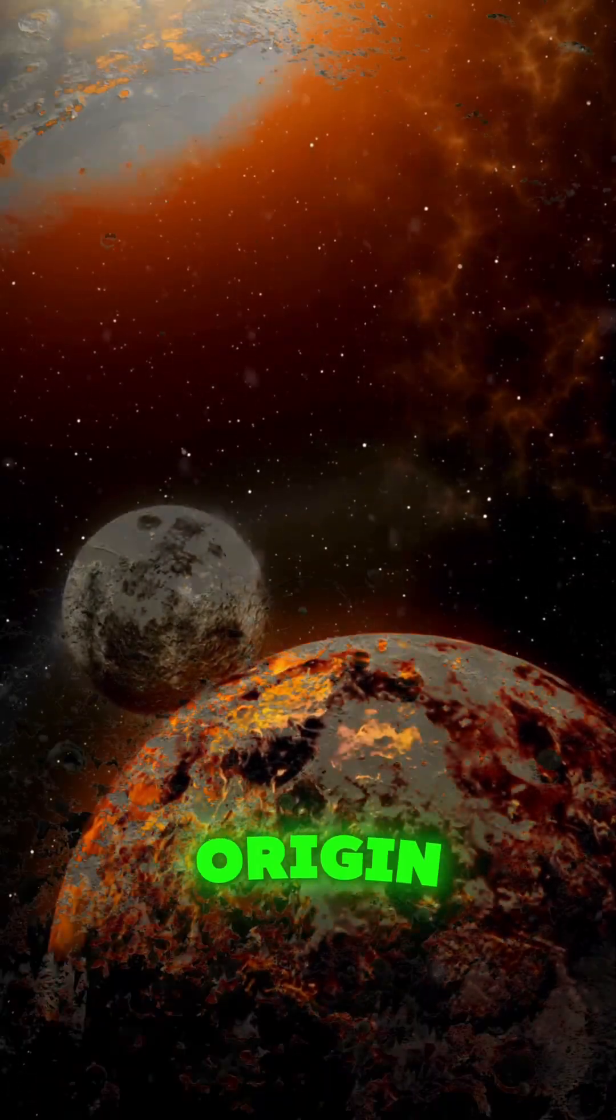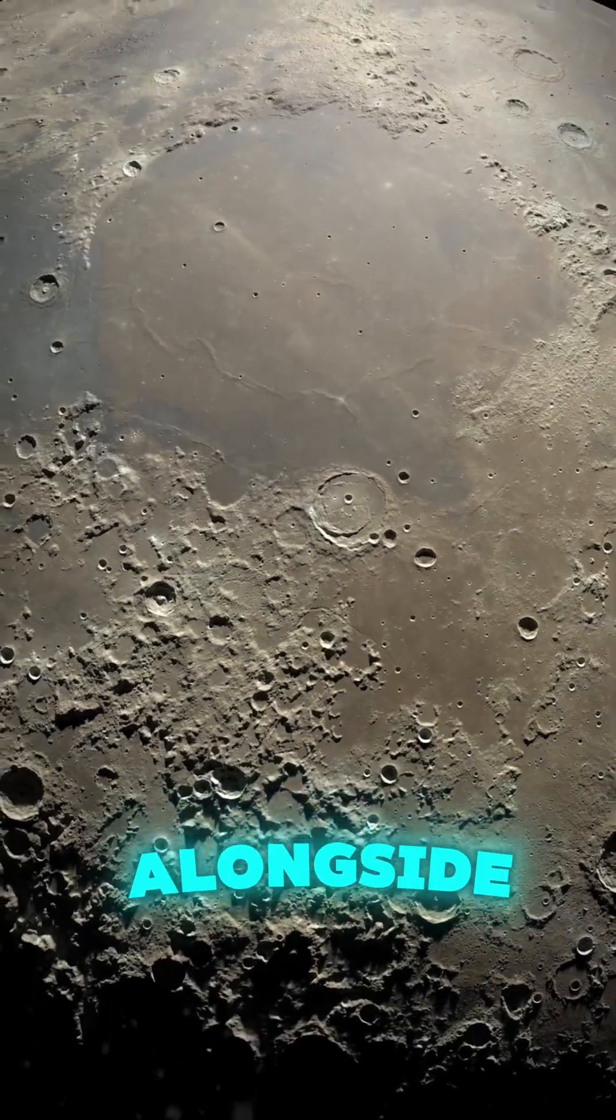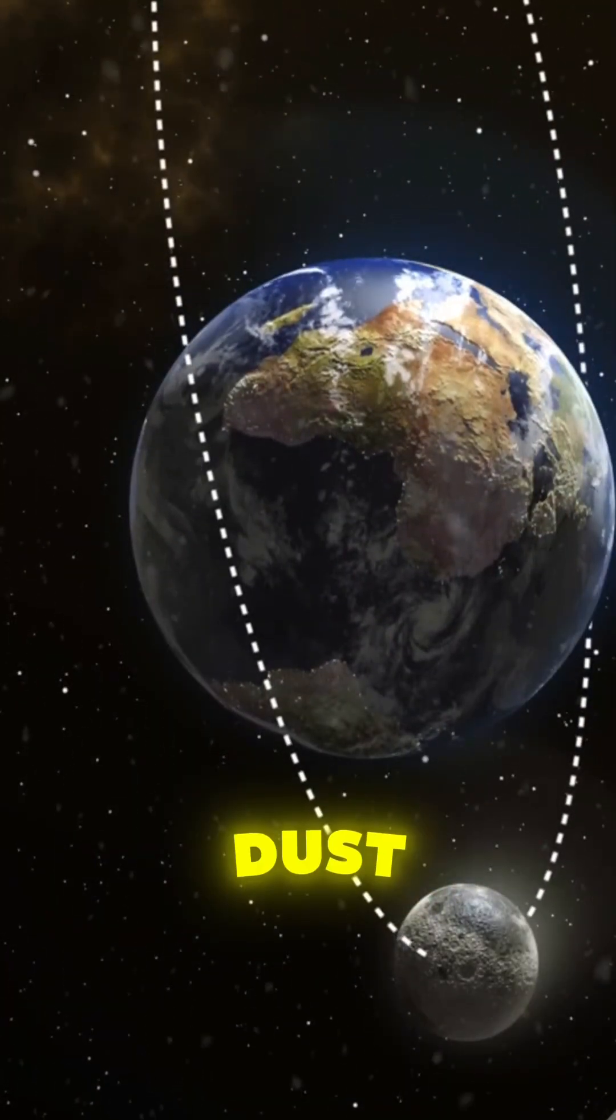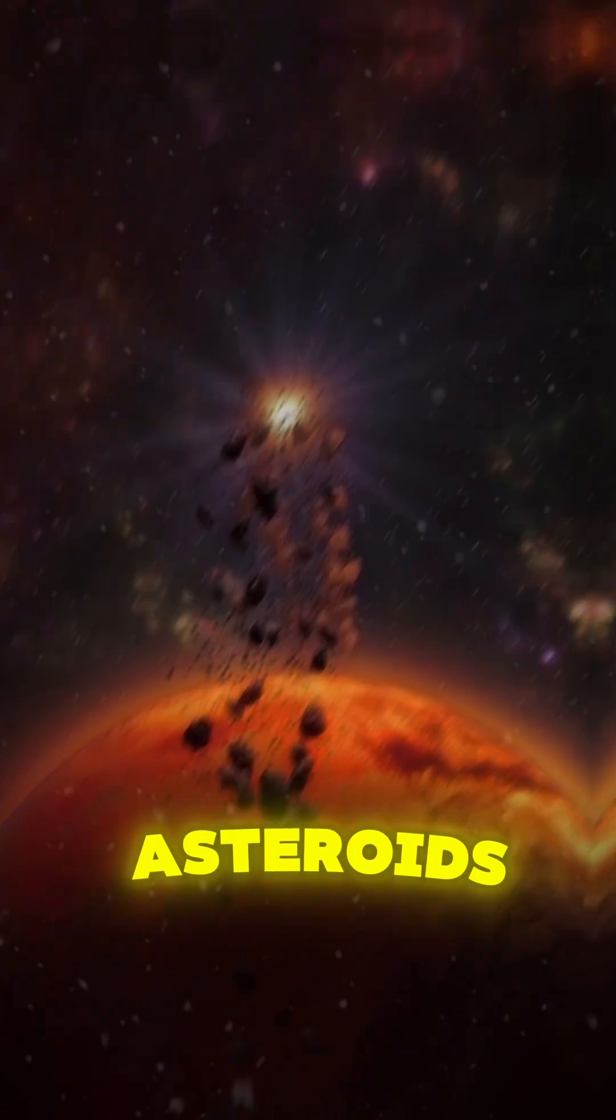But here's the interesting part. What really sets them apart is their origin. Unlike most moons, which form alongside their planets from the same cloud of dust and gas, Phobos and Deimos are likely captured asteroids.